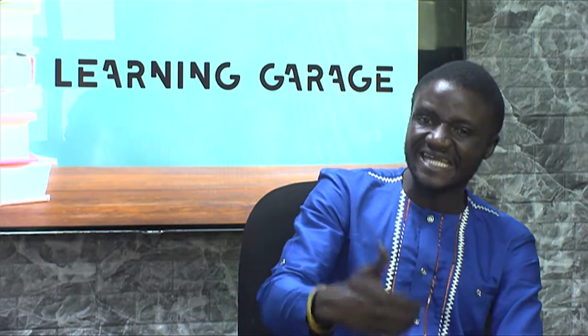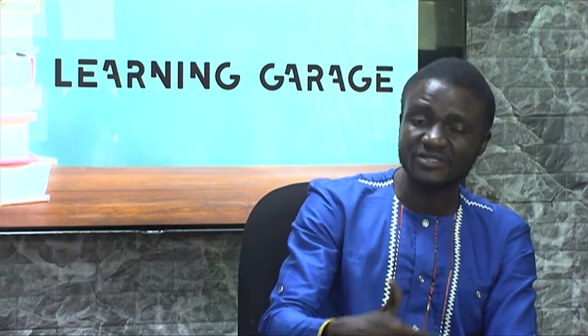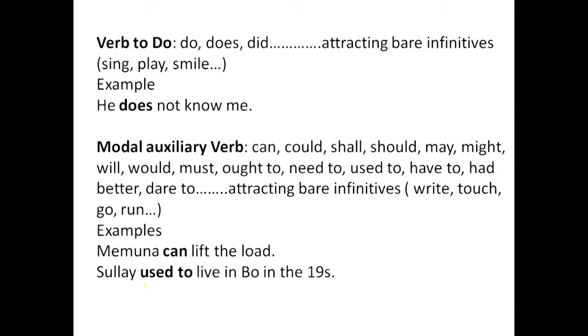So the other kind of auxiliary verb is verb to have — have, has, had. They could only be seen as auxiliary verb if they assist a nearby action verb. We have also seen verb to be: am, is, was, are, were. Verb to do includes do, does, did. Do, does, did could be seen as auxiliary verb if after them you have a verb that they assist. What they do: they attract bare infinitives.